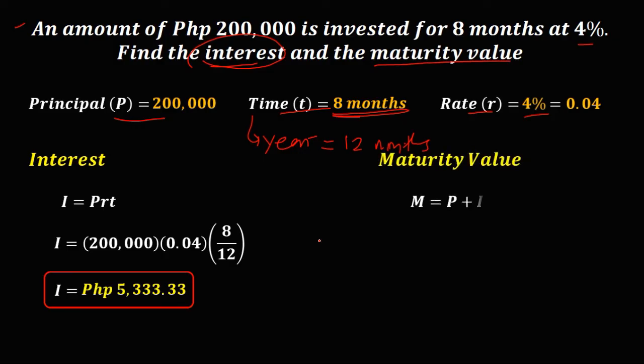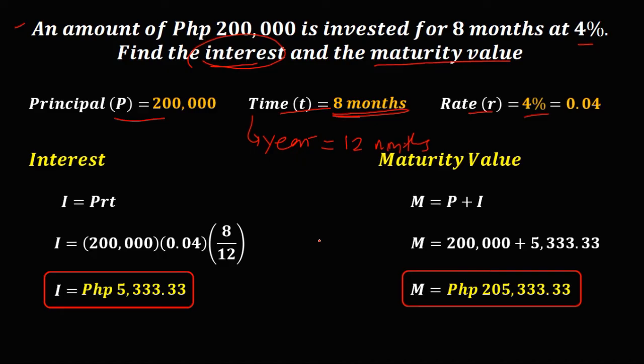And to solve for the maturity value, we have the principal plus the interest. So principal is 200,000, the interest is 5,333.33. So therefore, the maturity value is 205,333.33.